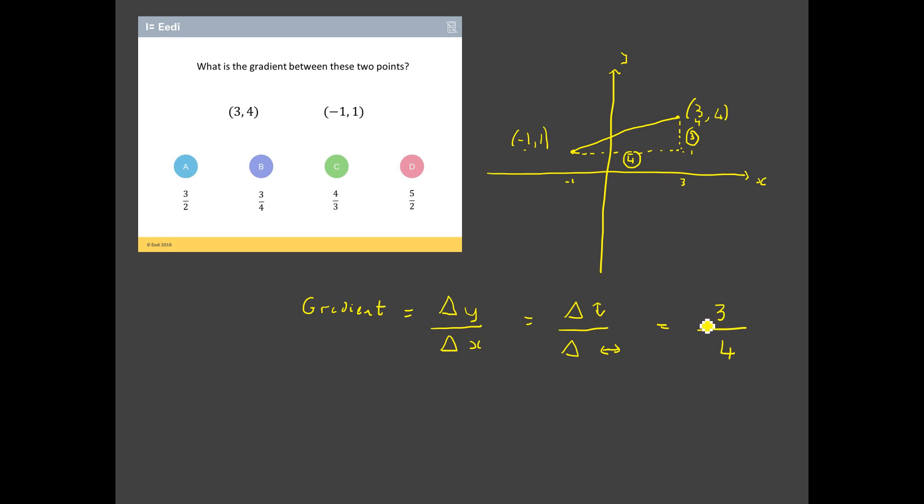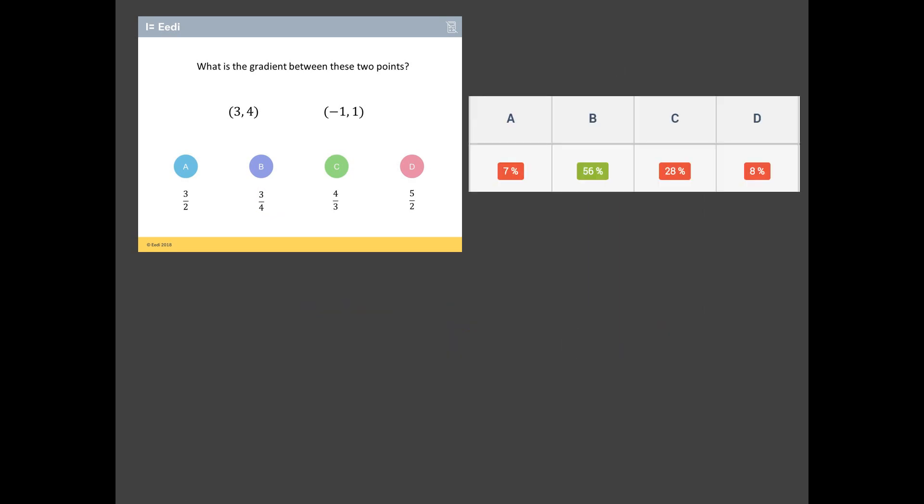So my gradient is my change in y, which is 3, divided by my change in x, which is 4. The only other thing I just need to check is that it's not negative 3 over 4. Well, I can see that my gradient is sloping upwards from left to right, which is a positive gradient. So my answer is going to be positive. So I'm going to go for a correct answer for this of b, 3 quarters. Let's see if I'm right. Yes, I am, luckily.